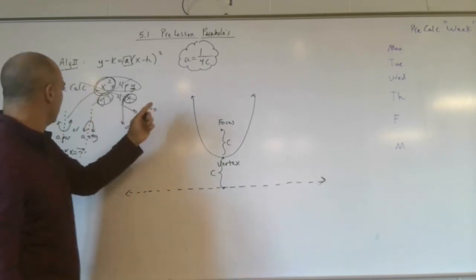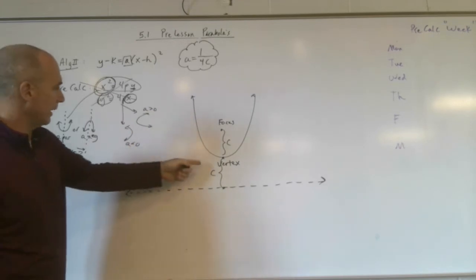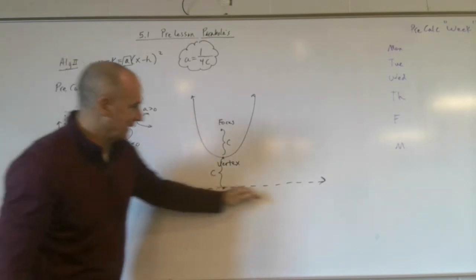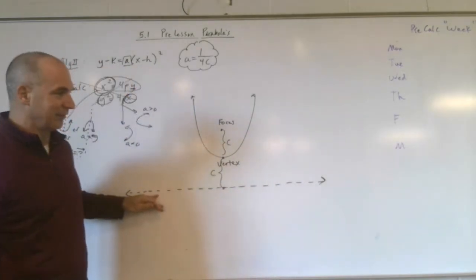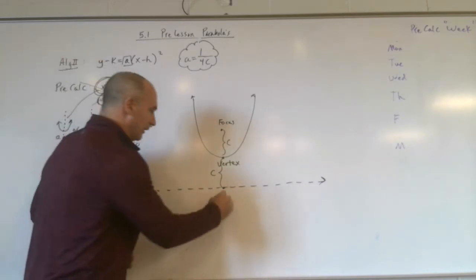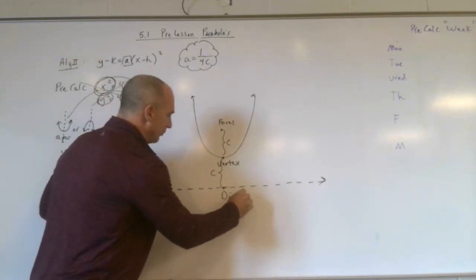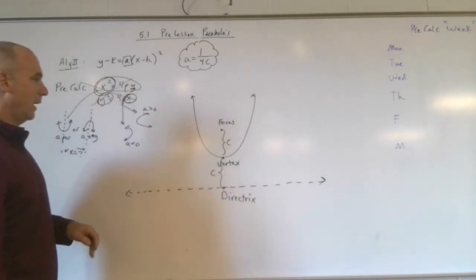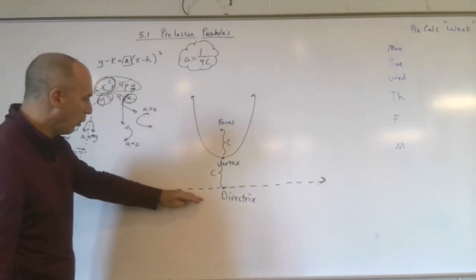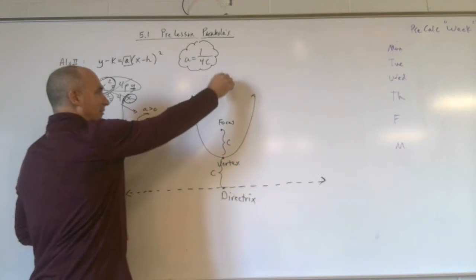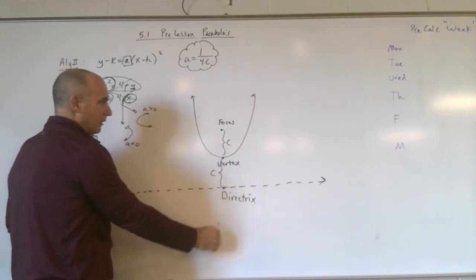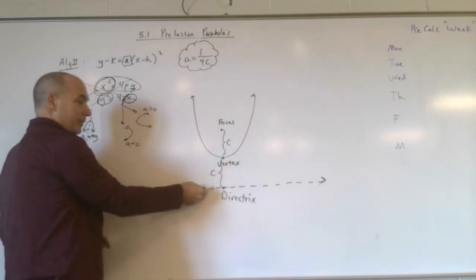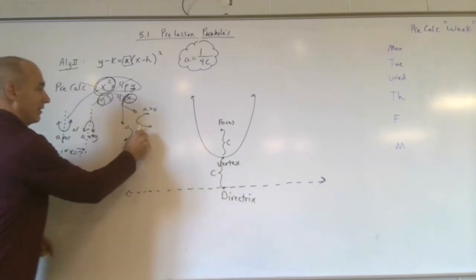As you can see, this drawing right here, we have a different dotted line, but see, this isn't the axis of symmetry. This is called the directrix. Let me go ahead and write that. I forgot to. This is the directrix. This is a horizontal line, but the axis of symmetry would go right down the middle, and it would be x equals something. Therefore, this is going to be y equals something.